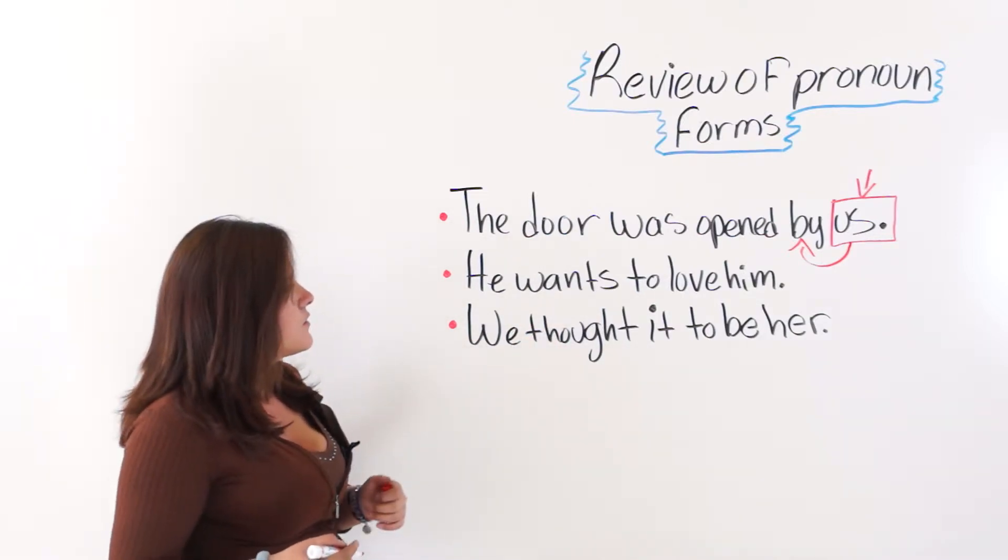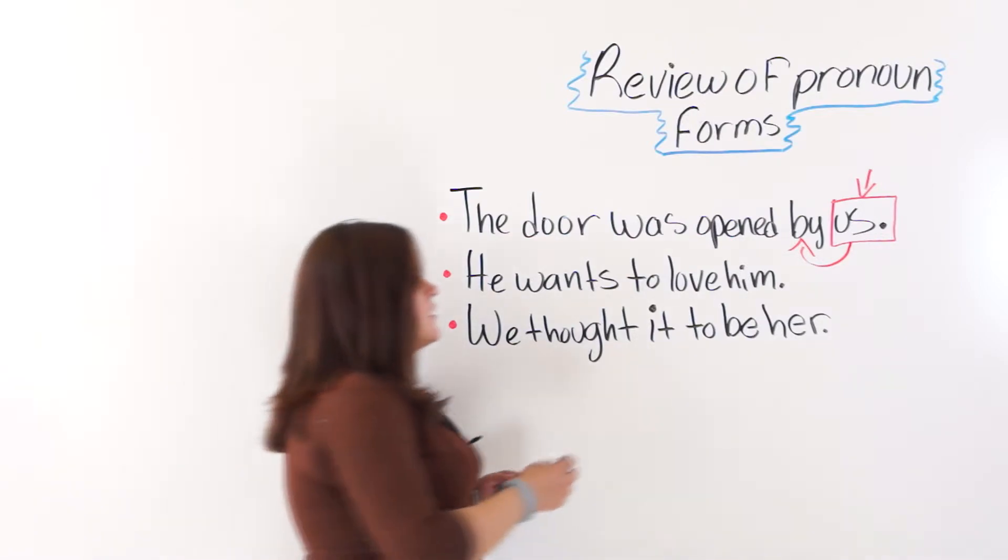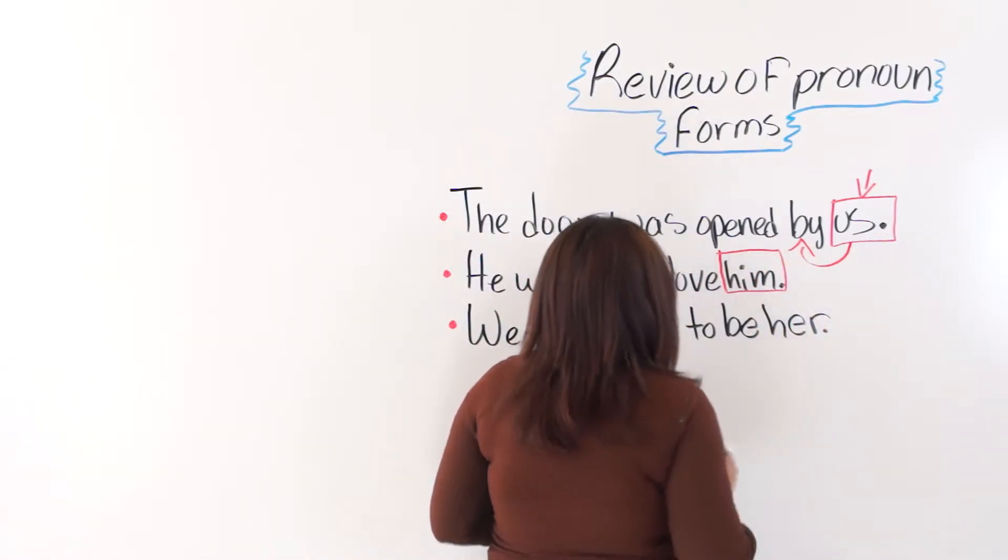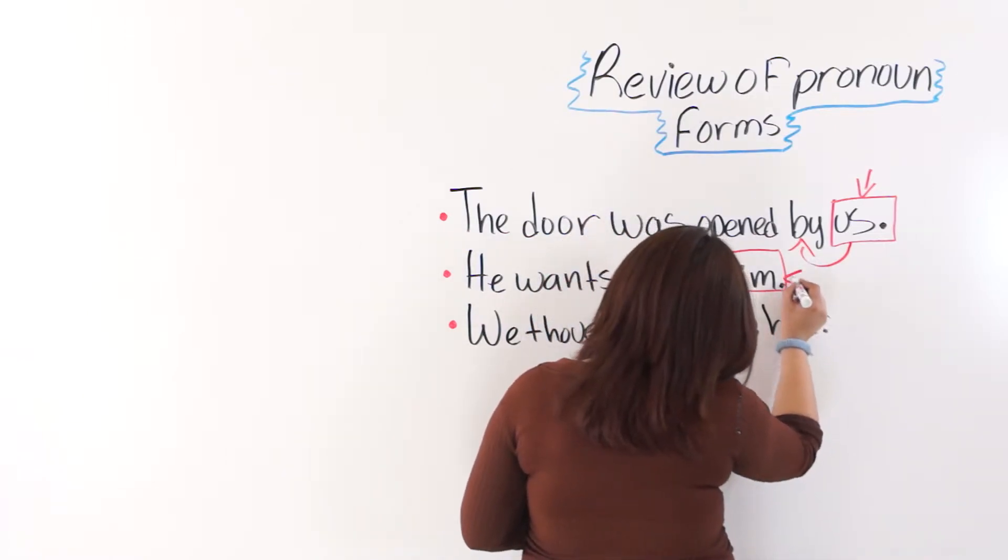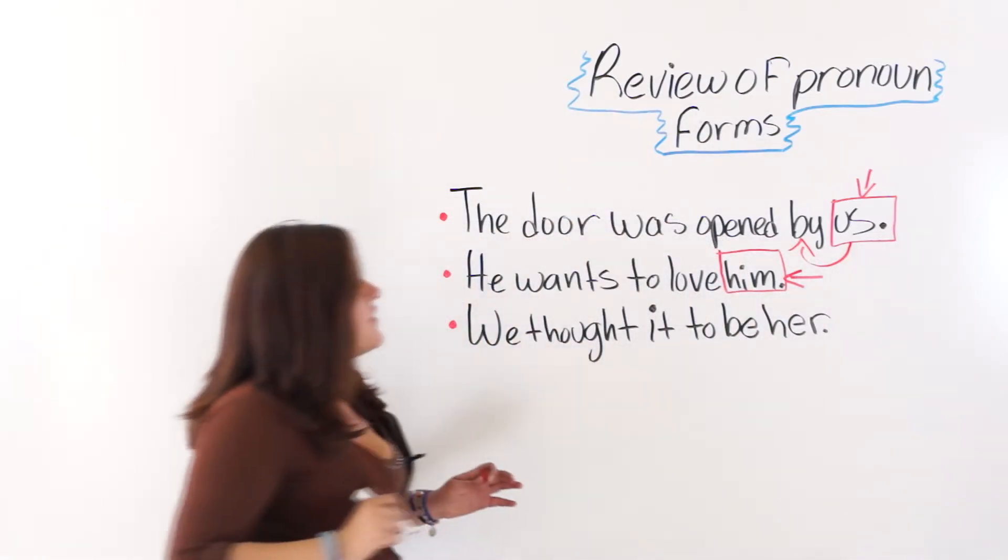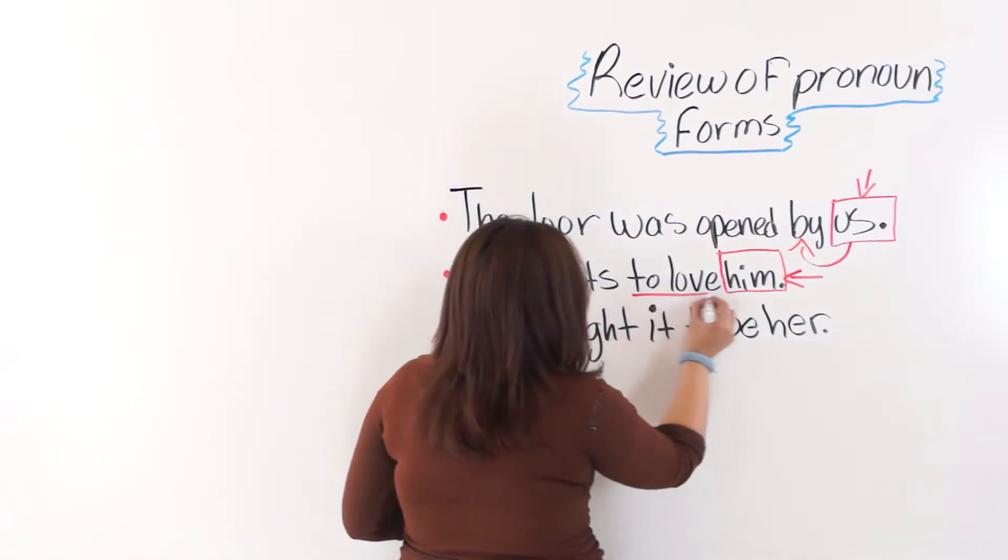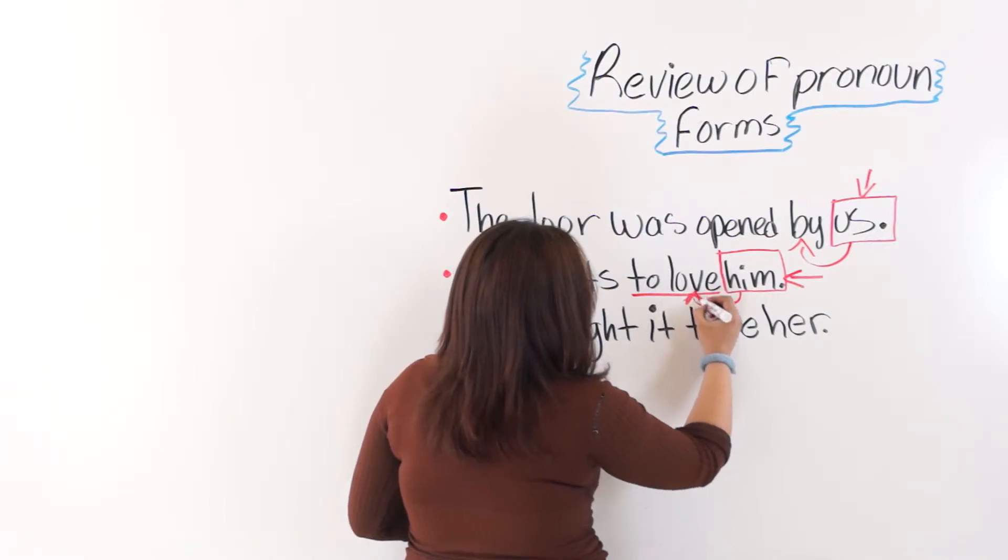The next one is, he wants to love him. Him is another object pronoun, and that is working as the object of this infinitive, to love.